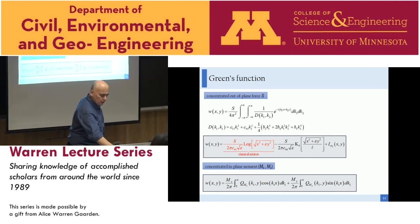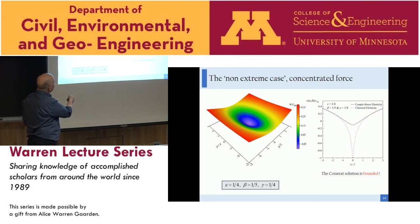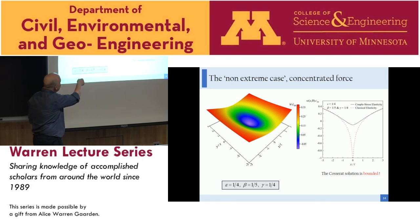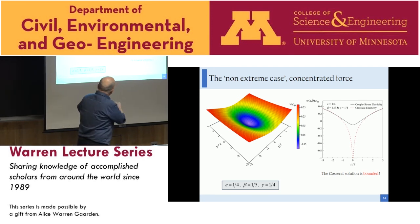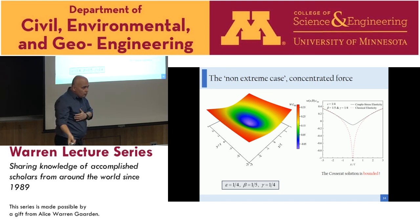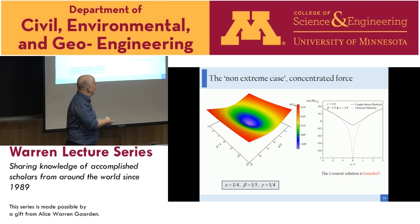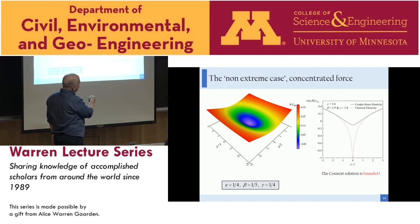For a regular, non-extreme material in the elliptic range, the Green's function shows nothing special. There is a concentrated vertical force and a normal displacement map. Something characteristic of couple stress elasticity is that the solution is not singular where the force is applied — similar to plate theory, where applying a transverse concentrated force gives no singularity. Far from the applied force, couple stress and classical elasticity solutions converge.